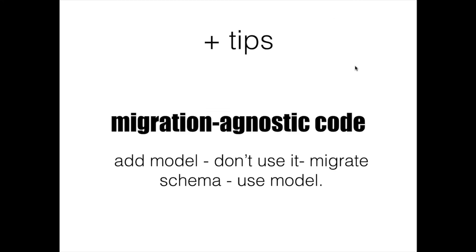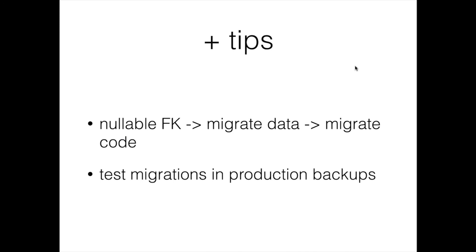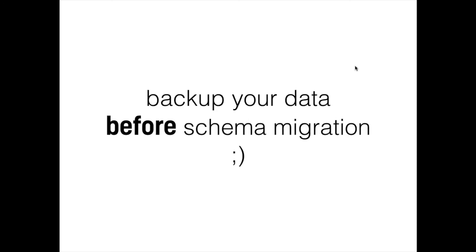Try to migrate your code at the model level: don't use the new model until you've migrated the schema, and then use the model. Use nullable foreign keys to migrate the data first, then migrate the code, then update again. Test migrations on production backups — that's kind of obvious, but our base rule is: backup your data before any schema migration. It's important to test your migrations; you can break everything. We've had a lot of problems with foreign keys in the past.